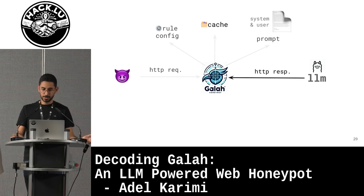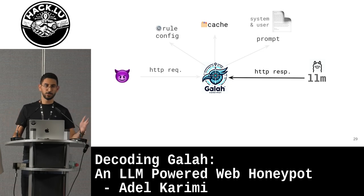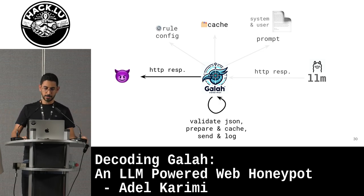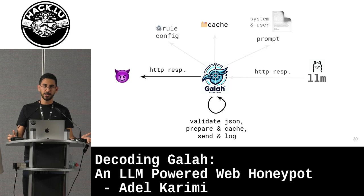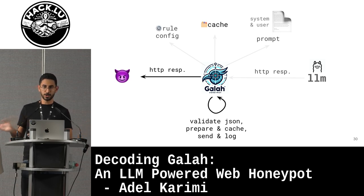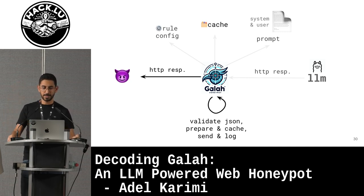Finally, you get the response, hopefully in JSON format without additional intro or text. The honeypot does some other checks because responses — depending on how smart the LLM you use is — may contain additional things you want to remove. So you clean the response, validate the JSON, then unmarshal it into the structure you want, with all the headers and body. Then cache it, log it, and send it to the attacker.